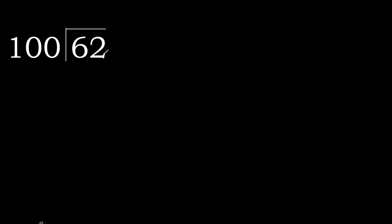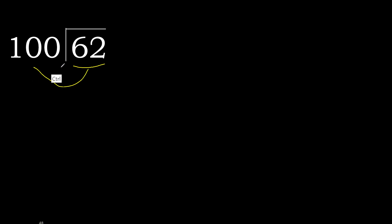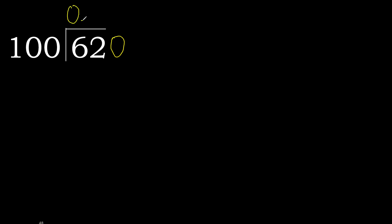62 divided by 100. 6 is less, therefore next. 62 is less, therefore next. There is no number, therefore complete — always complete with 0. Point is here: 0 point.